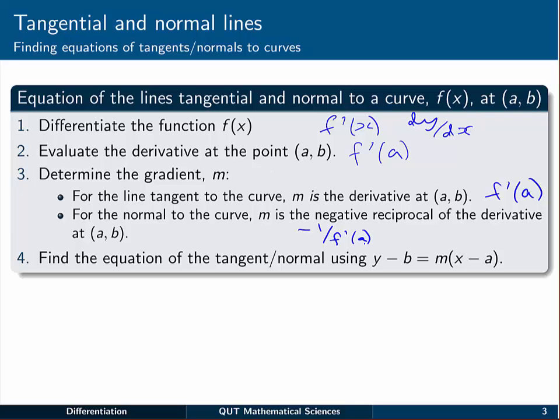Finally, we put this all together with the point slope form for finding the equation of a line. The equation of the tangent or the normal, whichever it is, is given by y - b = m(x - a).